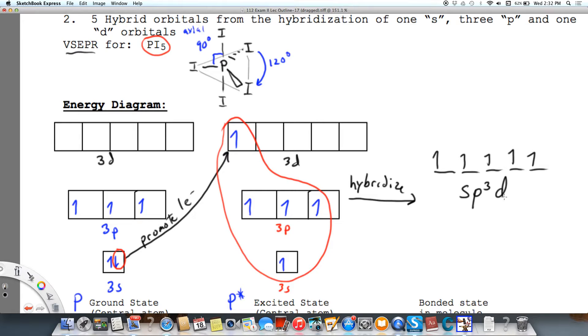And that shape is associated with trigonal bipyramidal. Anytime we have that hybridization, we're going to have trigonal bipyramidal.